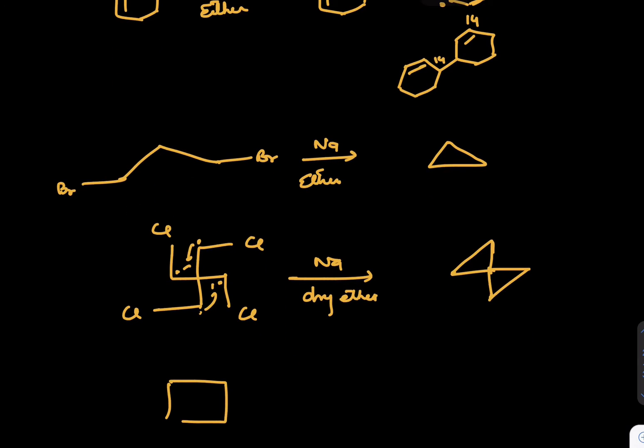If question comes in exam like this, let's say we have been given Br here and Br here, and then you do the reaction with Na dry ether. So what is the end result of this? You can just club them like this, and you must have heard a compound Cubane.